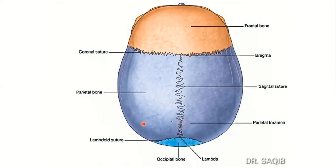Here is the parietal eminence — also called parietal tuber — not labeled in the image. On the lateral side of the sagittal suture, there are two foramina on each side: the parietal foramina, for the passage of the parietal emissary veins. These form a connection between the scalp veins and the superior sagittal sinus, which is one of the dural venous sinuses. Midway between the two parietal foramina at the sagittal suture is a point called the obelion.